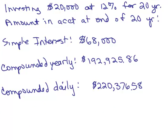All right, here are our results. If we invest $20,000 at 12% for 20 years, you can see the amount in the account at the end of 20 years. If you simply use simple interest, you'd only have $68,000 in the account. If you compounded interest yearly, you would have $192,925. Huge difference. And if you compounded daily, you have more, but it's not as huge of a difference, $220,376. Still, I'll take $28,000 more approximately. That would be fine. I'd prefer the compounded daily.